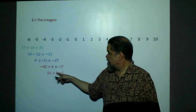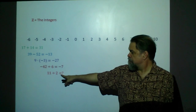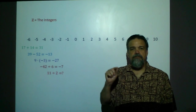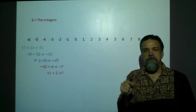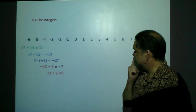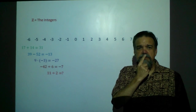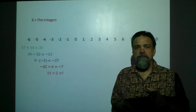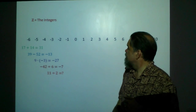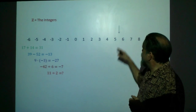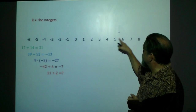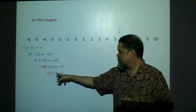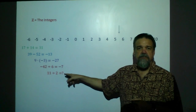We can subtract integers, including smaller number minus bigger number to get a negative number. We can multiply our integers — positive times negative gives us a negative answer. We can divide our integers, but we can't always do that evenly. For example, 11 divided by 2 doesn't work out evenly. We're looking for a number somewhere between 5 and 6, because 10 divided by 2 is 5, and 12 divided by 2 is 6.